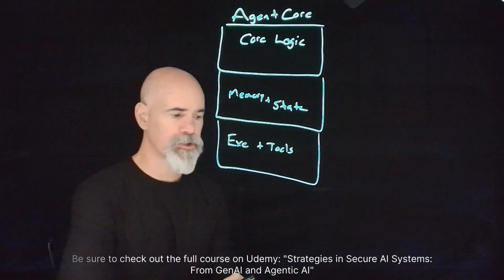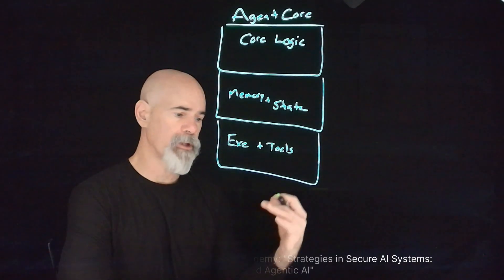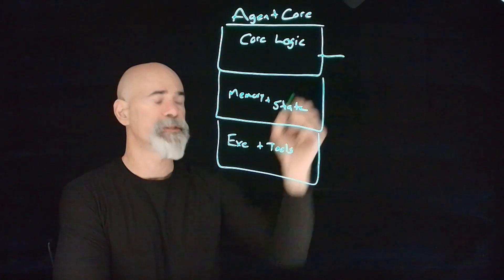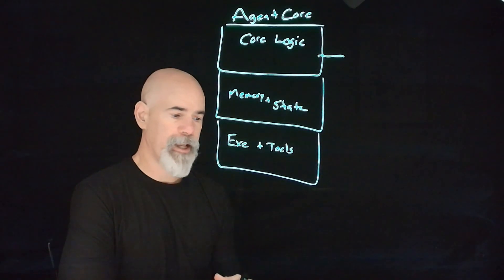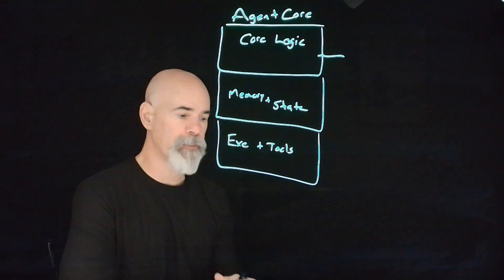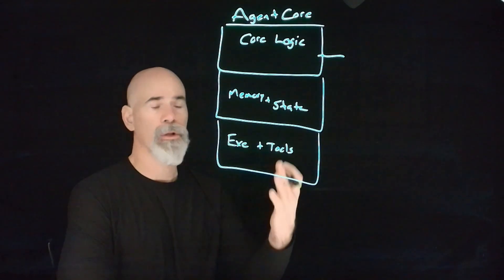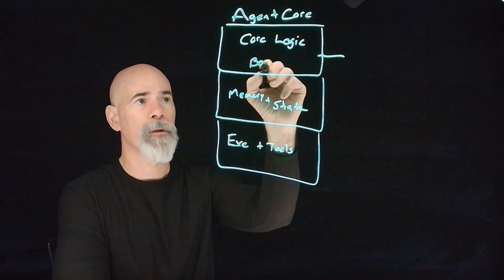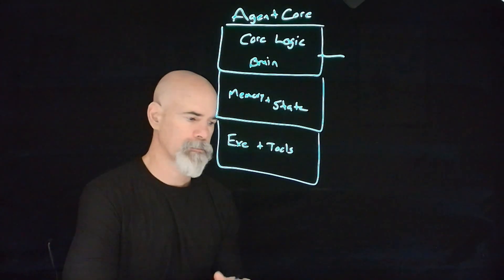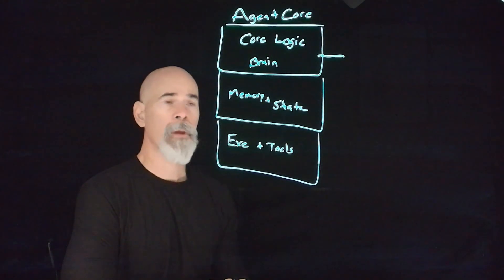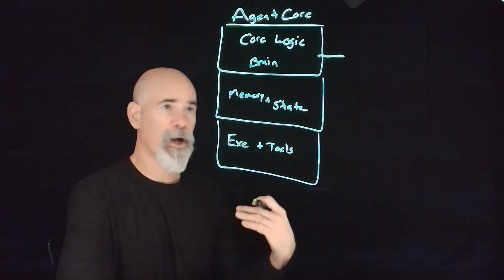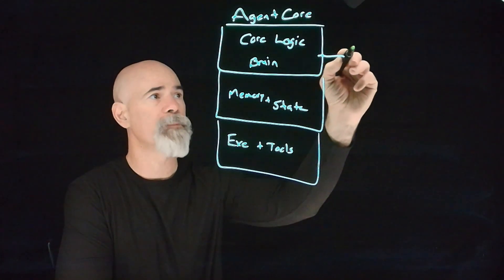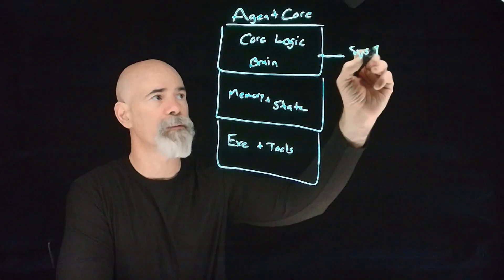A few of the concerns that we have here, especially around the core logic, is we want to fortify the agent's reasoning and instruction handling capabilities to prevent manipulation. This core logic is the brain of the agent. In order to provide that security, we want to have a couple key controls. We want to have prompt hardening — system prompt hardening.